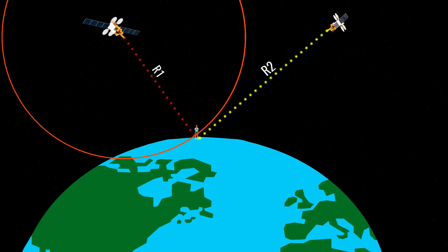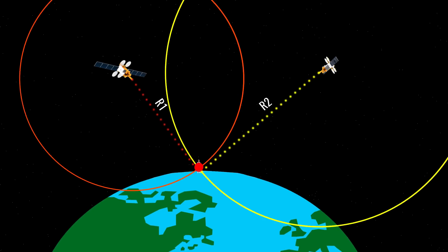The second satellite knows you are at a distance of R2, so you should be on this circle as well. This means your actual location should satisfy both these circles. In short, you should be on the intersection points.